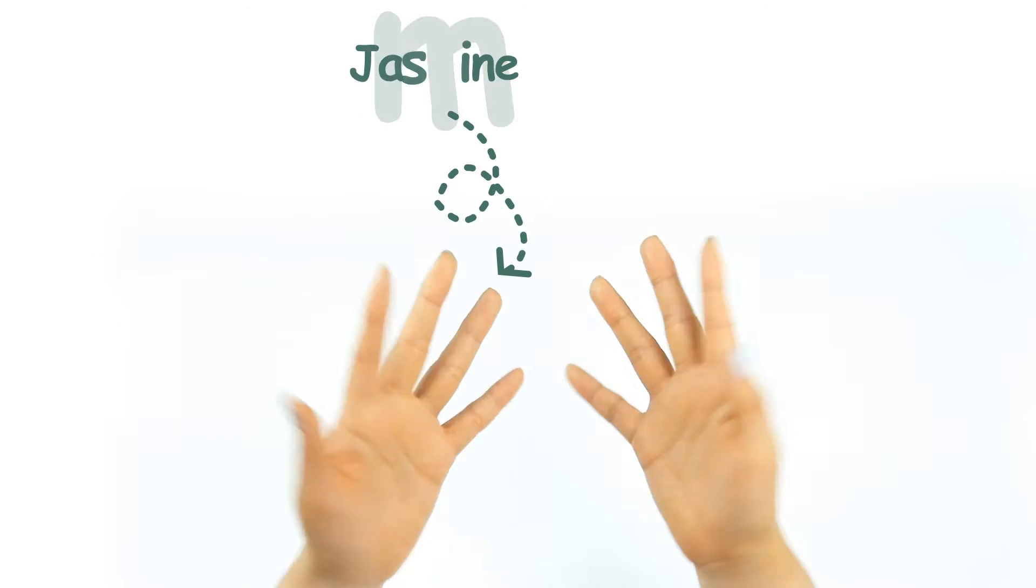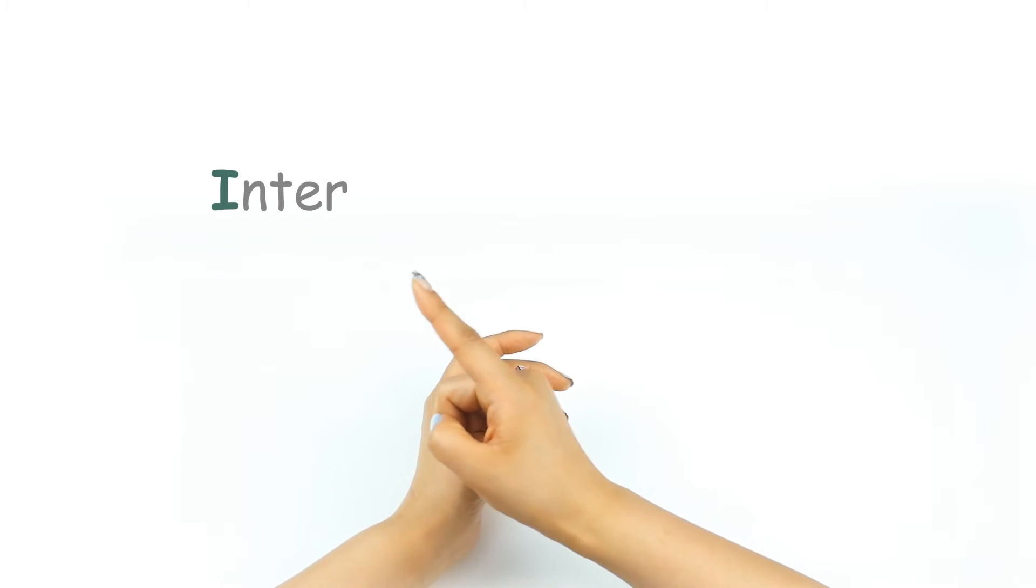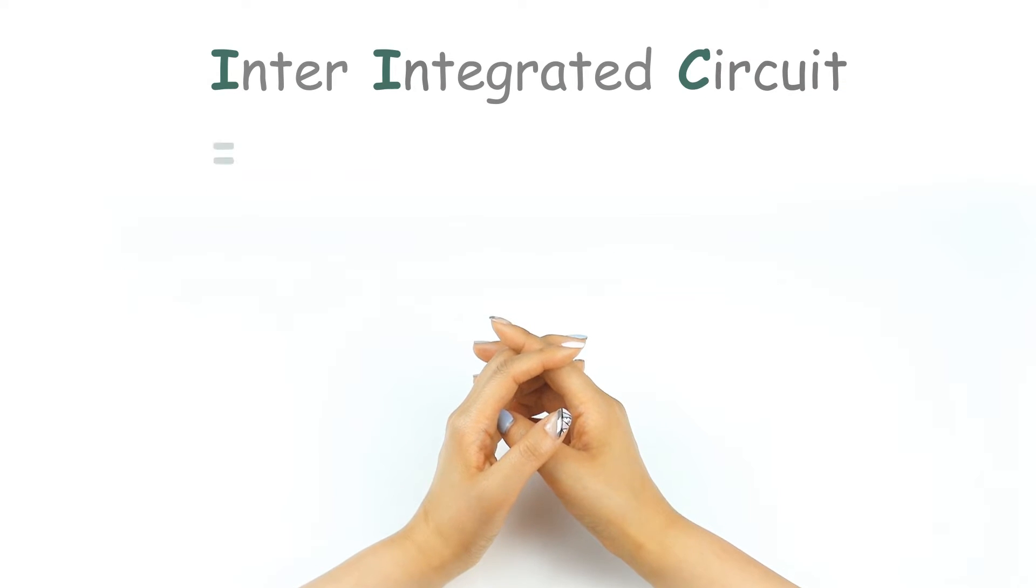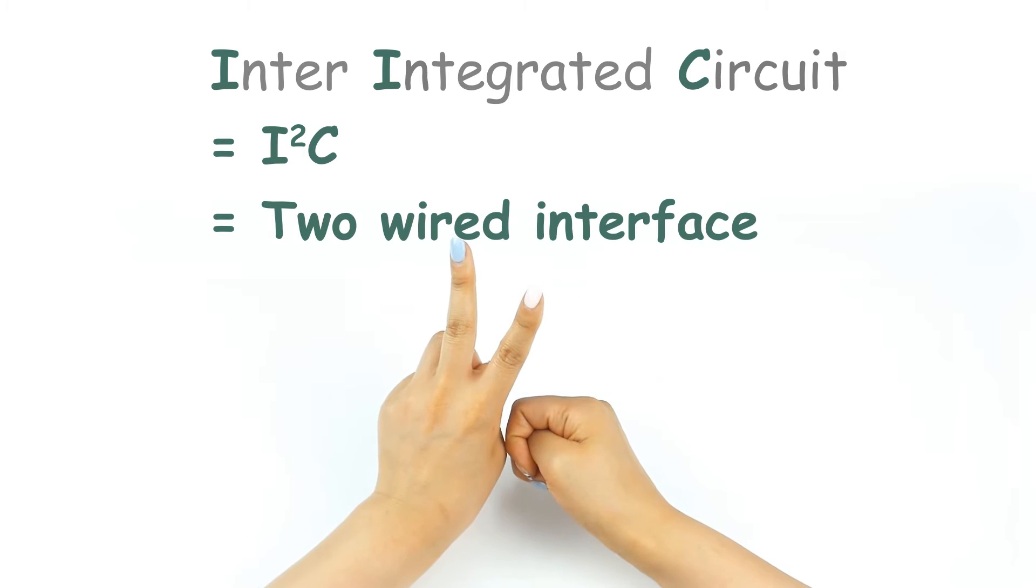Hi guys, here's Jasmine and today I'm here again to talk about I2C. I2C is a short word for inter-integrated circuit. Sometimes it is referred to as I squared C and also called two-wired interface.